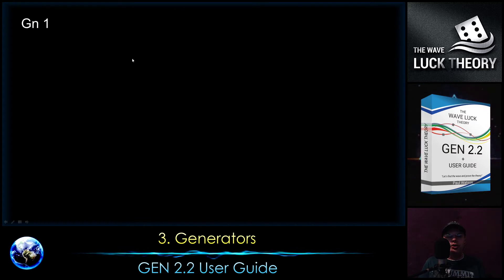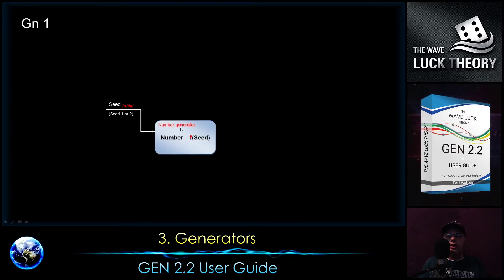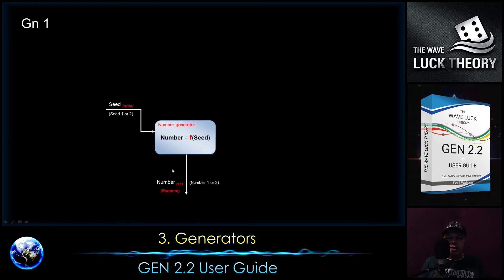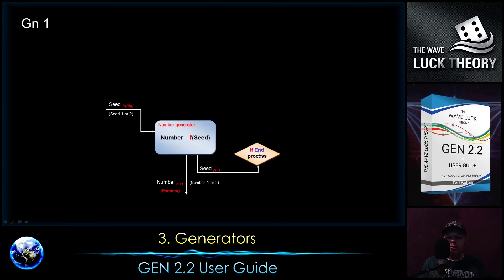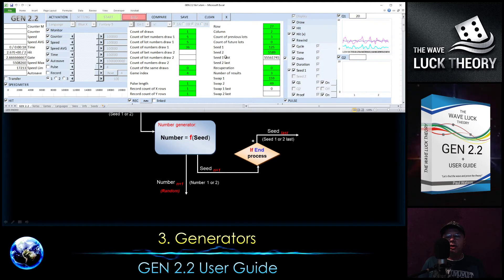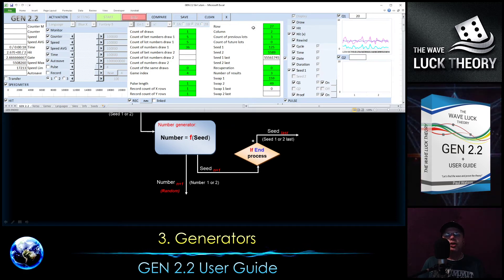Now I will describe both generators in more detail. For generator number 1 we are using an initial seed, and it goes to a function where the random number is a function of the seed. From that function we get a random number — for example with a range from 1 to 10 we get numbers like 5, 10, or 1. Together with this we get a new seed which is different from the initial seed. When we end the process this seed is stored as the last one — here is the initial seed which was used — and when I end it, you see there is the last seed. This helps me start the generator from the last save point.